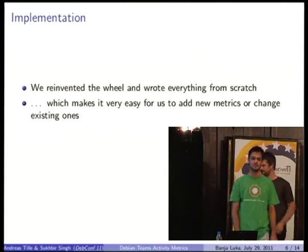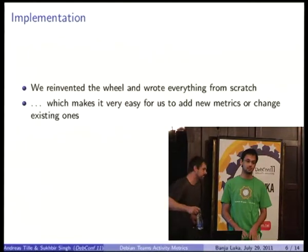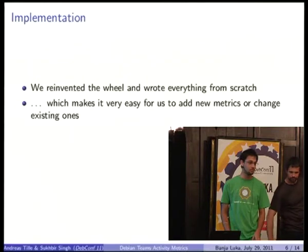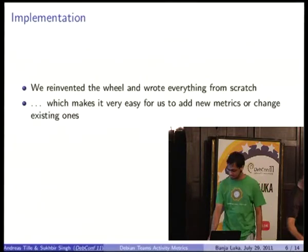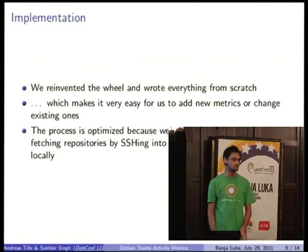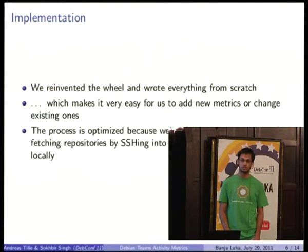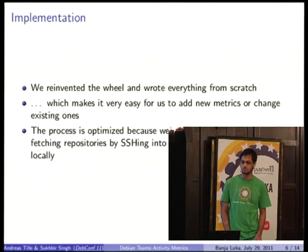Hi. Andreas had already done most of the work, but we decided to start from scratch because it was just a series of hacks — we needed something easier to maintain. So we wrote everything right from scratch. It's very fast compared to the previous code because for most operations, we SSH into Alioth and then perform them locally. For the Debian repository it took 12 to 14 hours initially, but with this approach it just takes two to three hours.